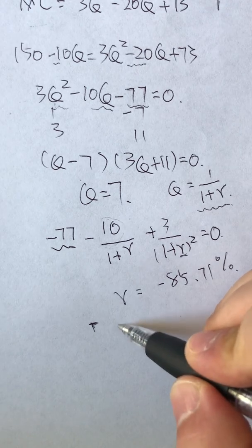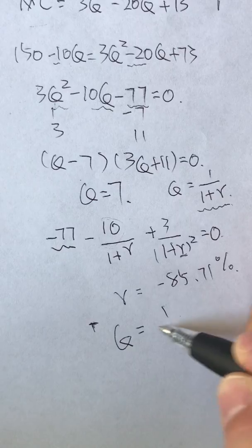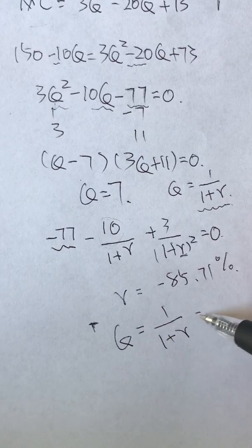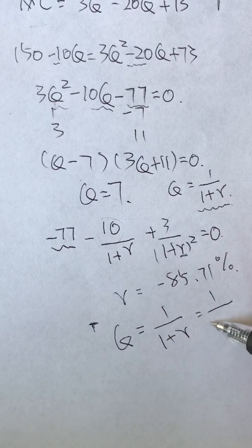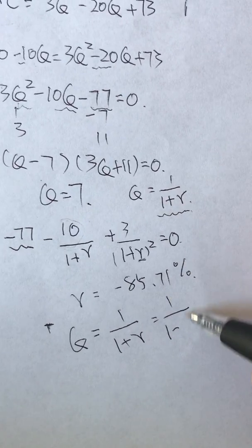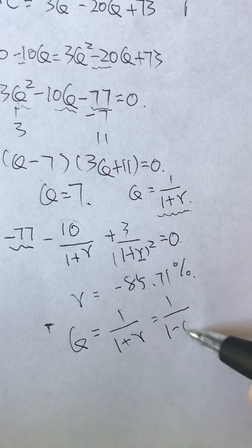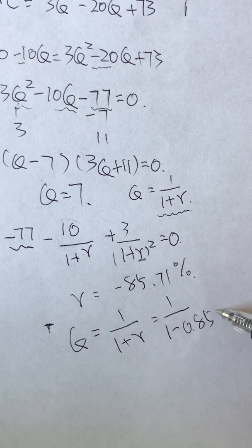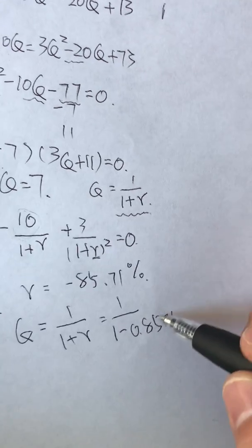Now let's solve for Q equals 1 plus r equals 1 divided by 1 minus, let's change the sign from percentage to decimal, and then we're going to end up with 0.8571.